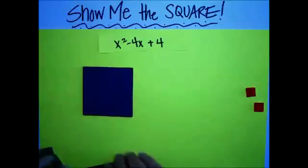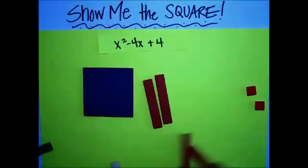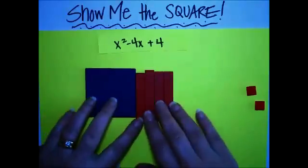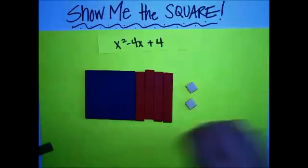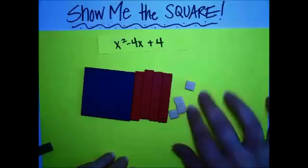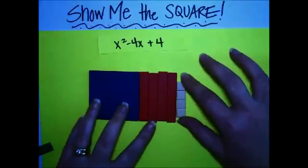Here is the x squared tile. And we need 4 negative x's and 4 positive units there. Looking kind of like a rectangle, not a square.